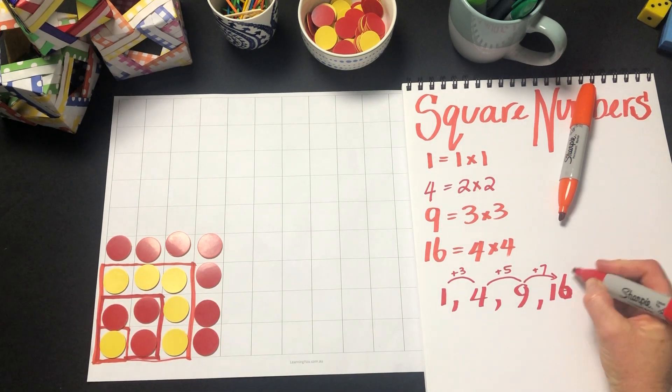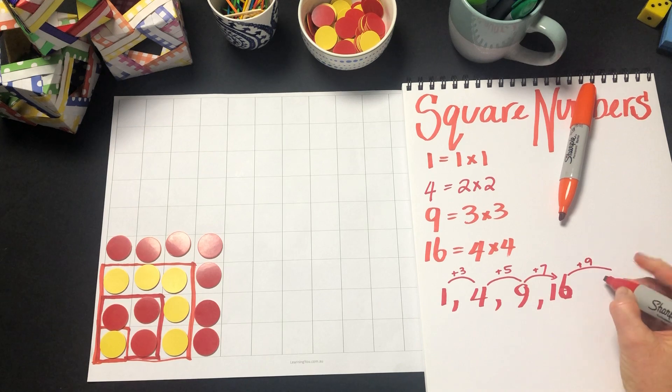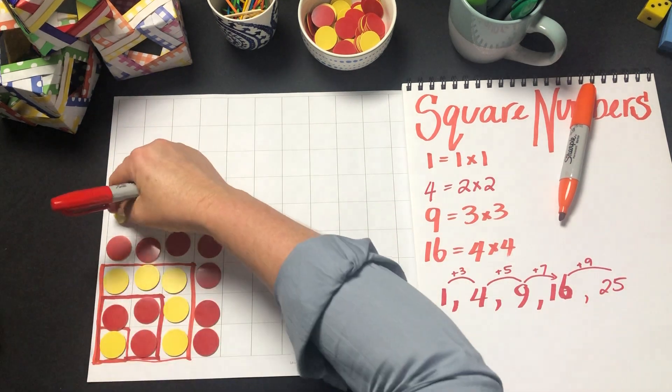So we would expect that if we add 9, we're going to get 25, and if we do that,